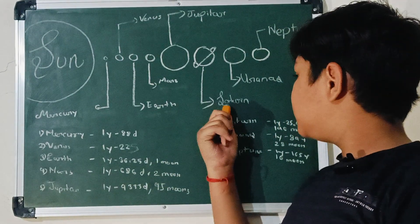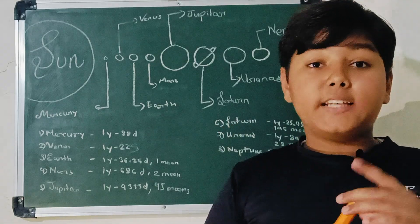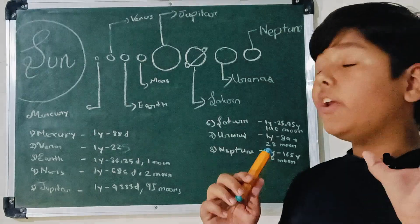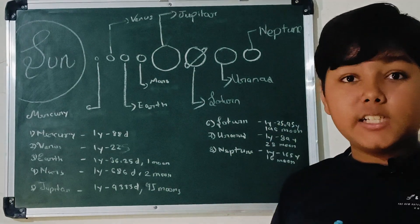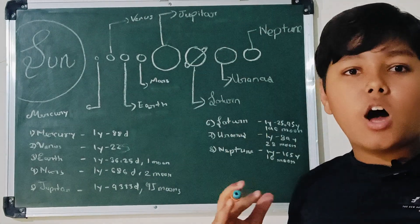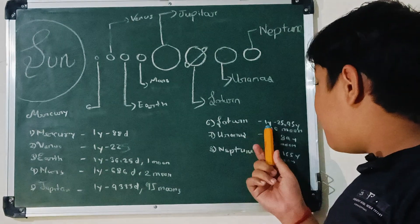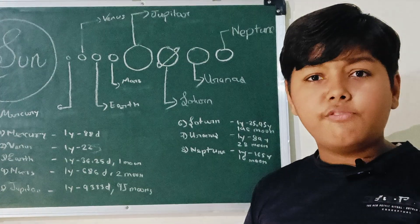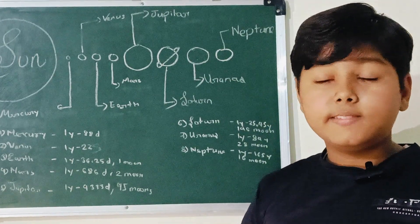Then after that comes Saturn. Saturn's 1 year is equal to our 25.45 years. Suppose how large a year it is. And it has 146 moons, more than 95 moons of Jupiter. Wow.